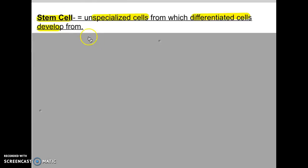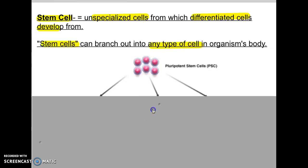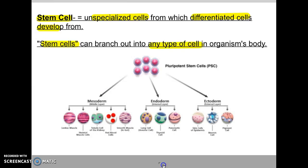Stem cells are unspecialized cells — they do not have a specific functional role yet, they have not differentiated yet, and they have not developed and decided what they are going to be. Stem cells will branch out and can become any type of cell in the body.